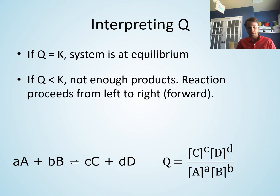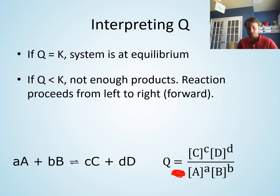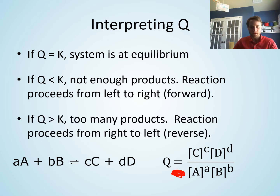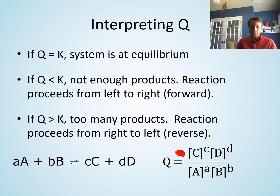If Q is less than K, that's telling you Q is a smaller number, which means there's a lot more stuff in the denominator — which is my reactants — so there are too many reactants and not enough products. The reaction is going to go to the right, in the forward direction. If Q is greater than K, then there are too many products, so the reaction has to use up some of those products to form reactants, and it will go in the reverse direction, to the left.